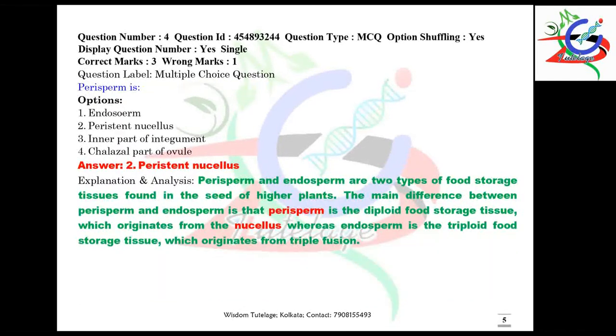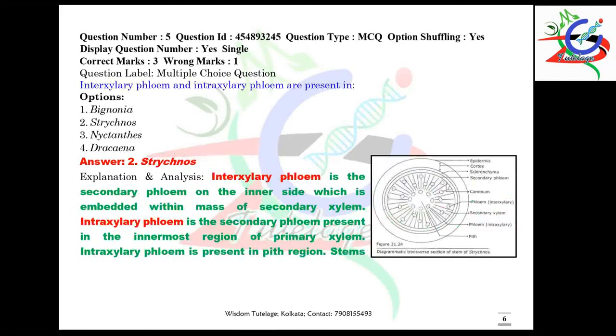Myrosine cells are positioned adjacent to the abaxial side of the vasculature, but their origin is unclear. Question number four: perisperm is nothing but the persistent nucellus. The explanation is given here.